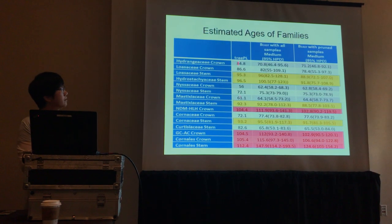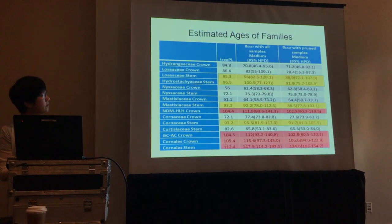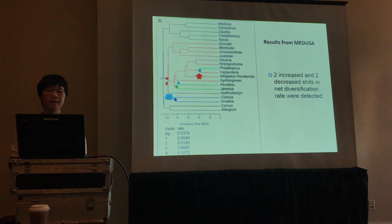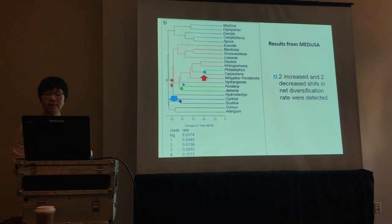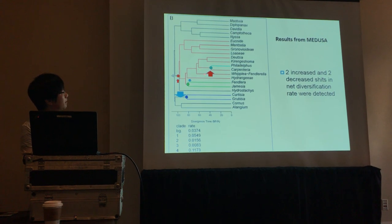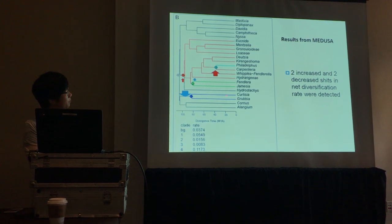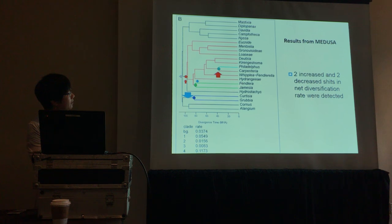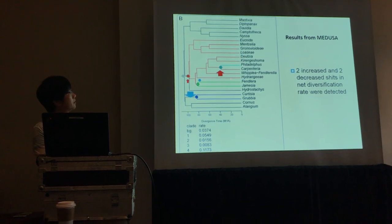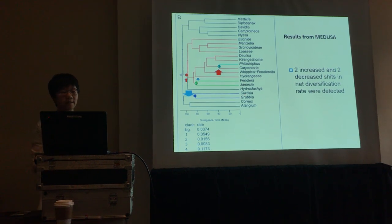This slide shows the exact divergence times of the major divergence events in Cornales, and the two methods provide very similar estimates for those ages. Results from MEDUSA found an increase of net diversification rate in the Hydrangeaceae-Loasaceae clade, and another dramatic increase in the Cornus lineage. There is a decrease of the rate in the Curtisia lineage, and another decrease in the Grubbiaceae, Nyssaceae, and Mastixiaceae.